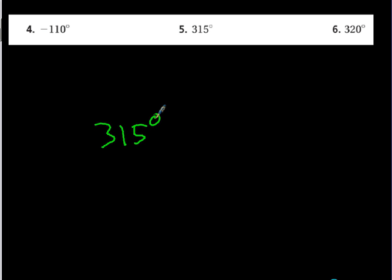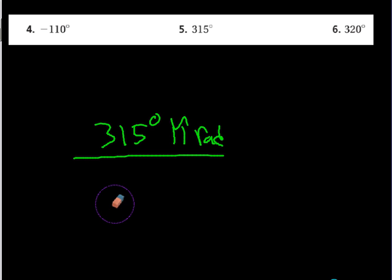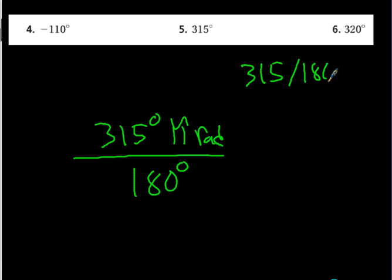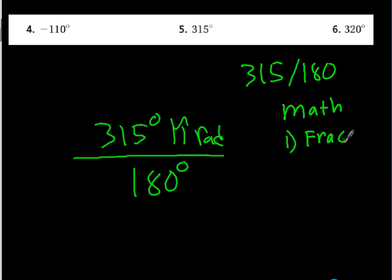Number 5: 315 degrees times pi radians over 180. I have 315 over 180, which isn't as easy to simplify mentally. I'll go ahead and put it in my calculator: 315 divided by 180. If it doesn't divide evenly you'll probably get a decimal, but then you can convert it.